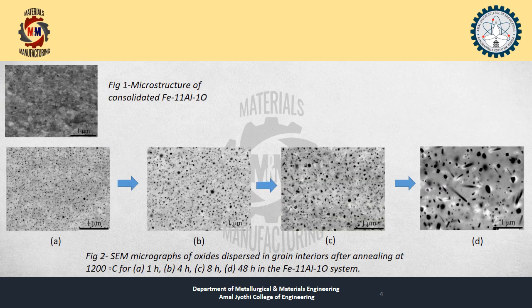As you can see, Figure 1 is a microstructure of a consolidated iron alloy, and in the second figure we can see 4 types of microstructure. The first one shows oxide dispersion annealed for about 1 hour, Figure B shows 4 hours, C shows 8 hours, and D shows 48 hours. As you can see in the figures, the oxide dispersion increases as annealing time increases.